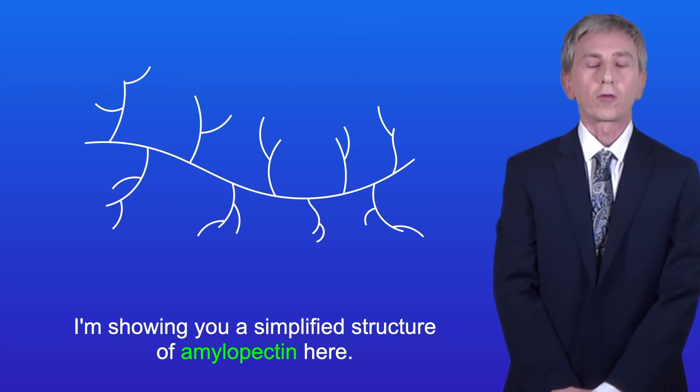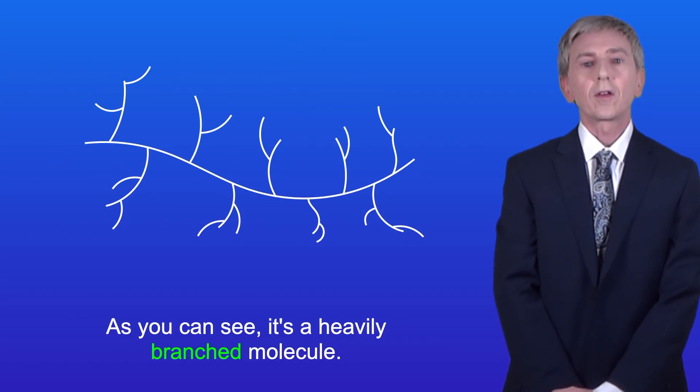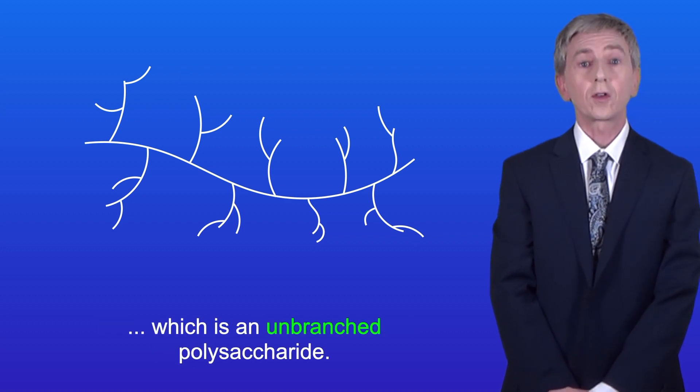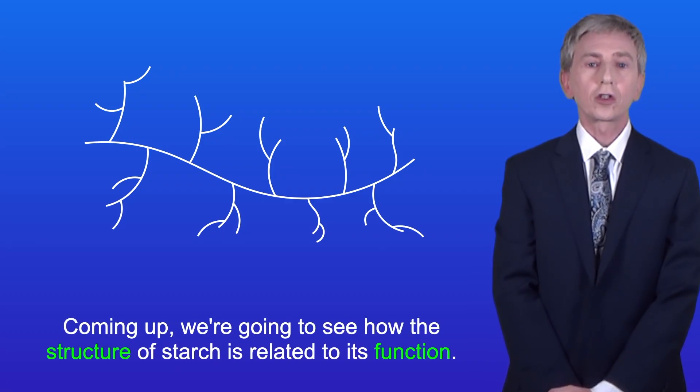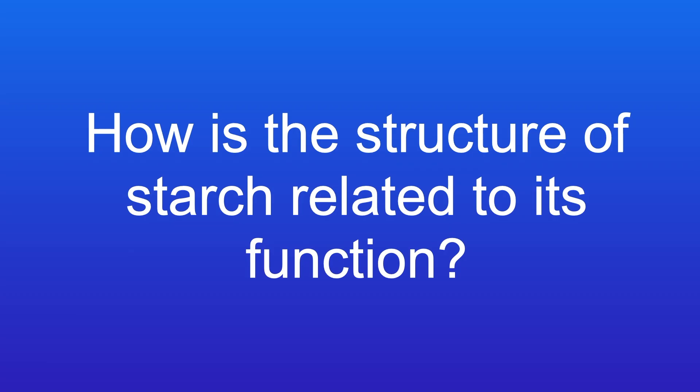I'm showing you a simplified structure of amylopectin here, and as you can see it's a heavily branched molecule. This makes amylopectin different to amylose, which is an unbranched polysaccharide. Coming up we're going to see how the structure of starch is related to its function.